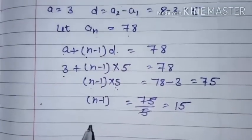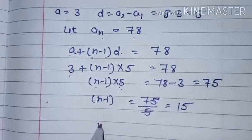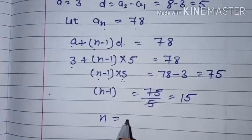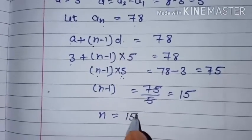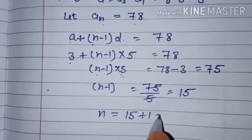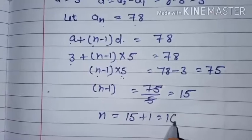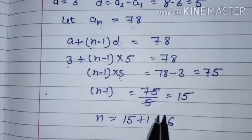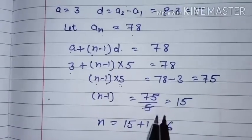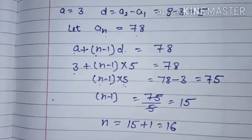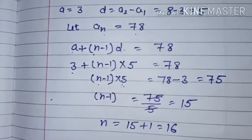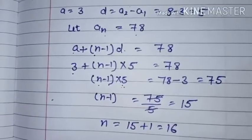Now we have to find n, so take minus 1 to the right hand side. It becomes plus, so n equals 15 plus 1 equals 16. It means 78 will come at the 16th position in this AP. I hope that's clear.